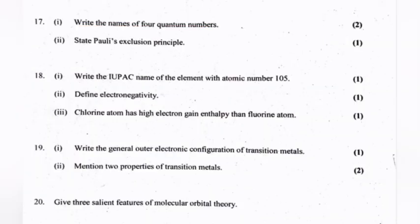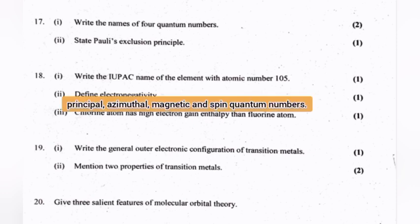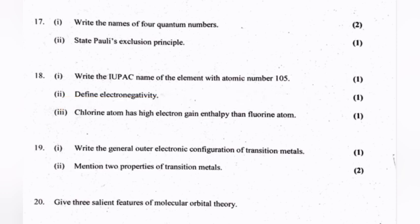Write the name of four quantum numbers. Answer: Principal quantum number, azimuthal quantum number, magnetic quantum number, and spin quantum number.